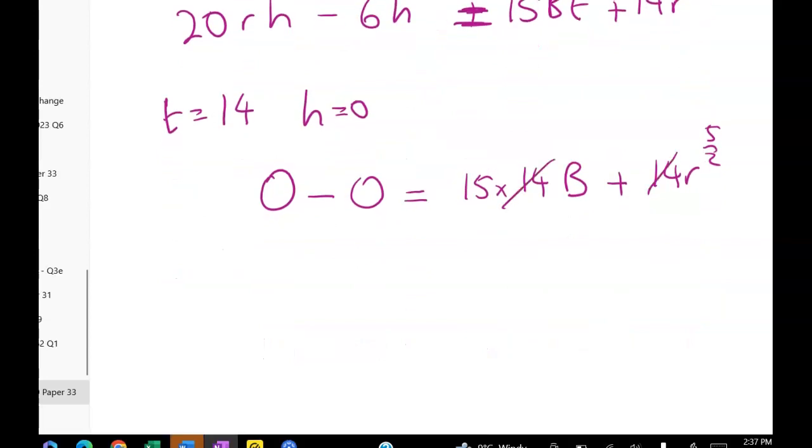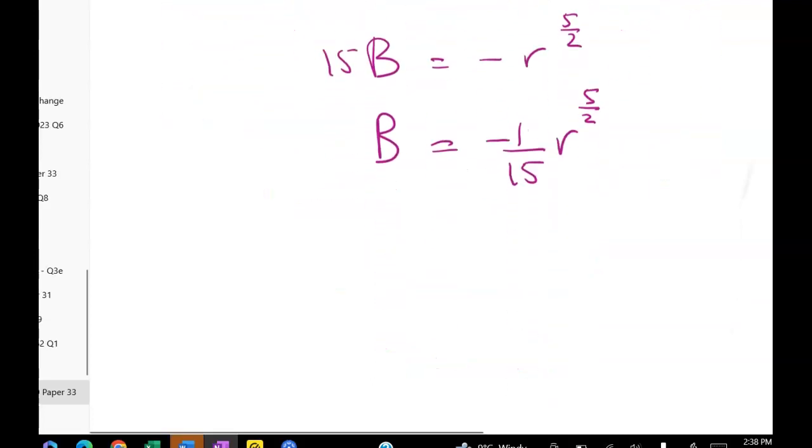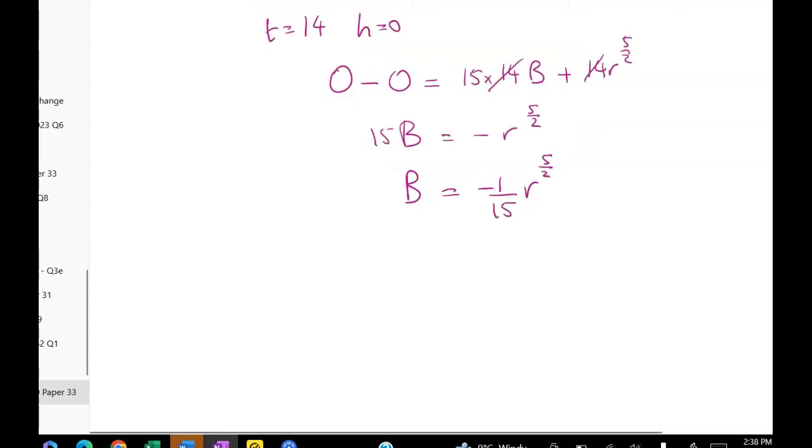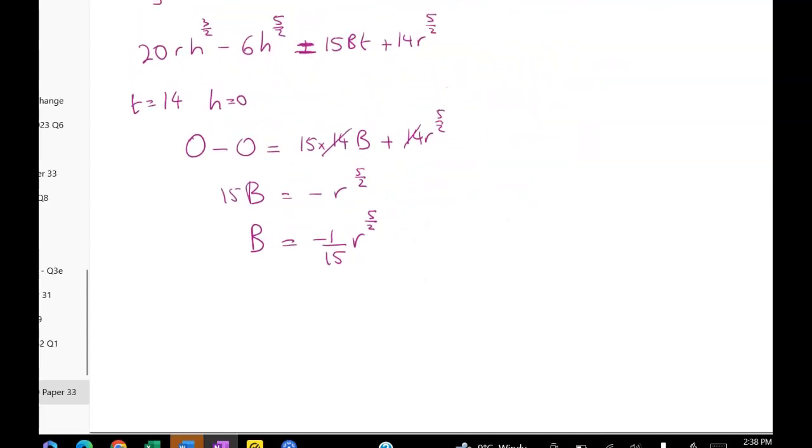I'm going to divide through by those 14s. So that gives me B, 15 B is equal to negative R to the five over two, giving me B is equal to negative one fifteenth R to the five over two. So we're nearly done. We've found B and we've found C. And let's write all of that back in because we have to solve for T.